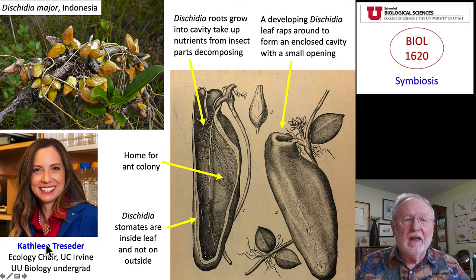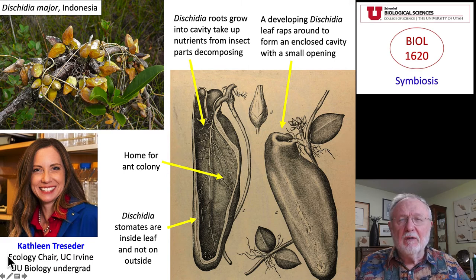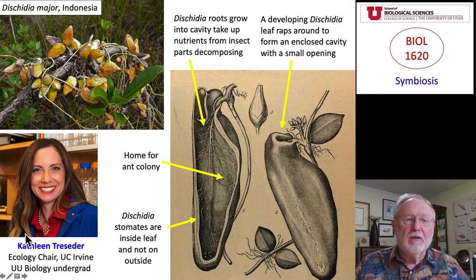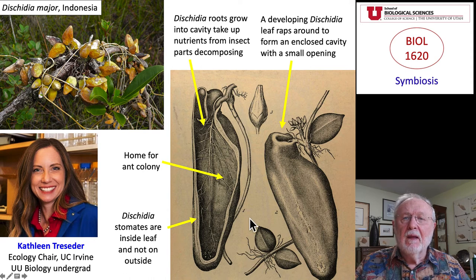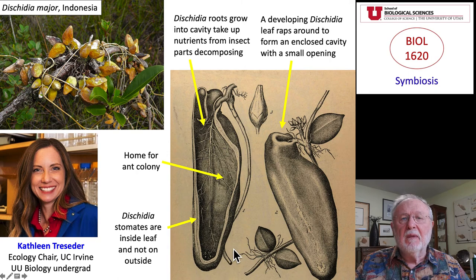This work was done by none other than Kathleen Treseder, when she was an undergraduate biology student here at the University of Utah. Kathleen now has a faculty position at the University of California, Irvine. She is a very well-regarded, internationally recognized scientist and chair of the Department of Ecology at UC Irvine, one of the strongest ecology institutions in North America. For her project, she began to evaluate the interactions between the ant and the plant.